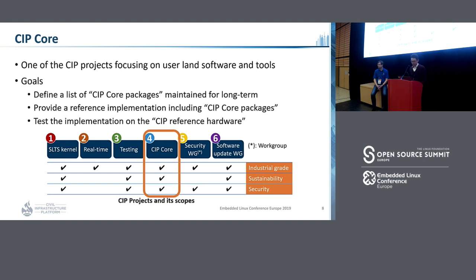There are several work groups in the CIP project, and CIP core is one of them, focusing on user-run software and tools. One of the goals of CIP core is to define a list of CIP core packages that should be maintained for a very long term by CIP, and also to provide the reference implementation including the core packages, and to test the implementation on the CIP reference hardware which is decided by the CIP project members.